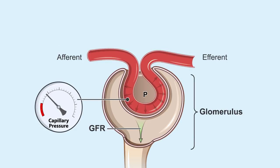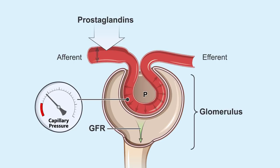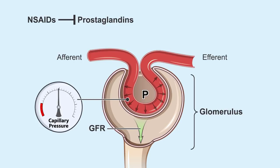In these same states of volume depletion, prostaglandins may preserve kidney perfusion and GFR by dilating the afferent arteriole. However, NSAIDs block this protective action of prostaglandins and may also decrease glomerular pressure and GFR.